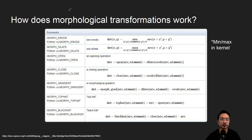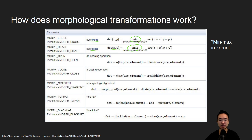So how does it work? There are a lot of different types. The two main fundamental operations are erosion and dilation. The way erosion works is you look at a kernel — for erosion, you will take the minimum value inside the kernel, and for dilation, you would take the maximum value inside the kernel. The other morphological transformations are a combination of erosion and dilation. The open operation is erosion first, then dilation. For close, it's the reverse: dilation first and then erosion.